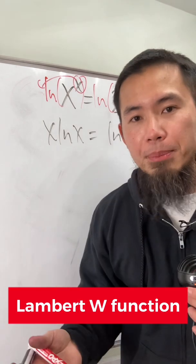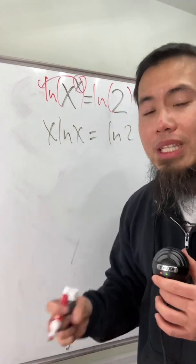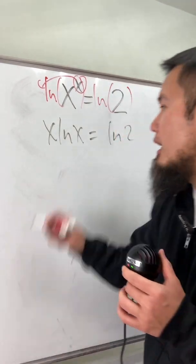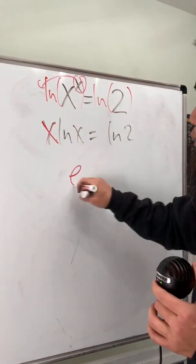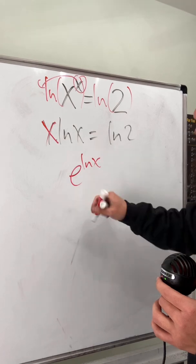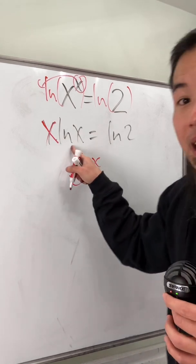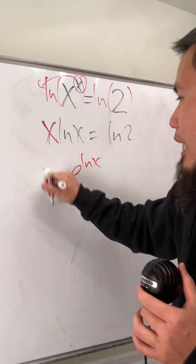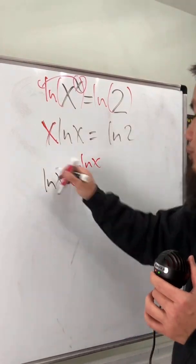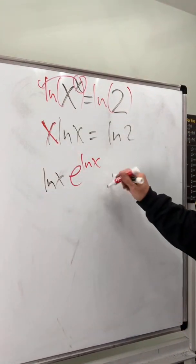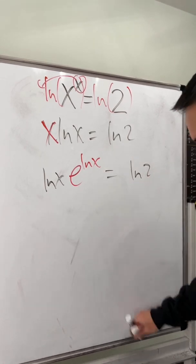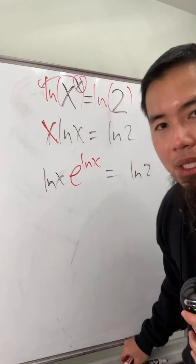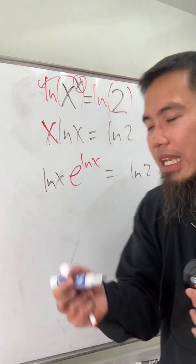To use the Lambert W function, we have to use e. We look at this x right here as e to the ln x power. This is very nice because we have ln x in the front, and the whole expression is equal to ln 2. Now we are ready to use the Lambert W function.